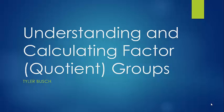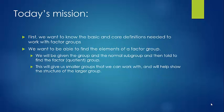Understanding and calculating factor groups, also called quotient groups. The names are interchangeable, so you're going to hear both — factor groups and quotient groups. We're going to get into where that name comes from and why it's easy to remember. Let's go on to the first slide.